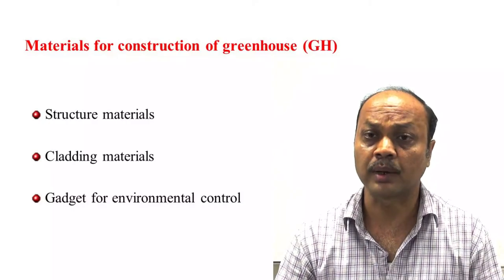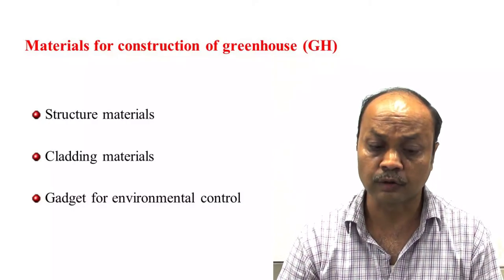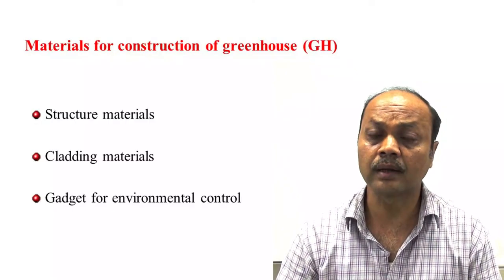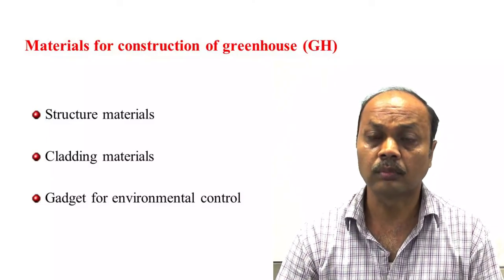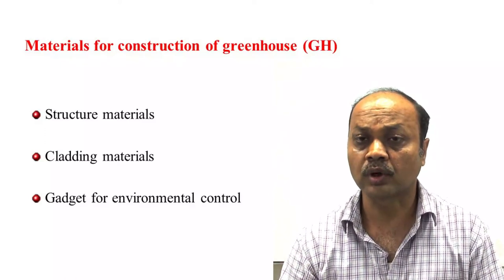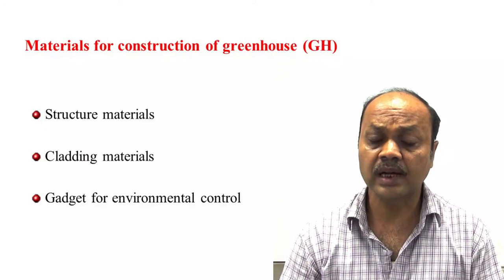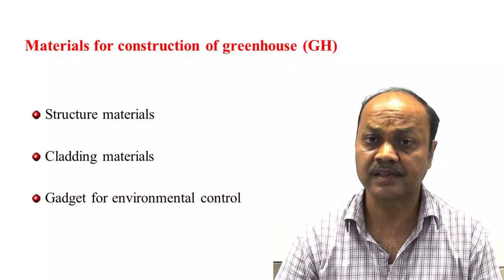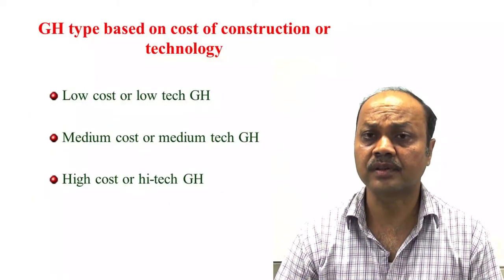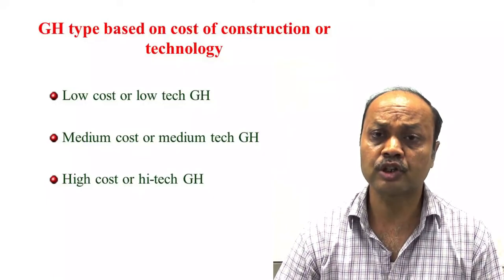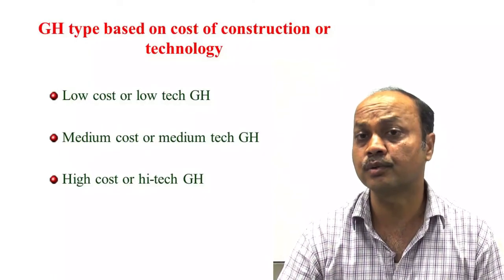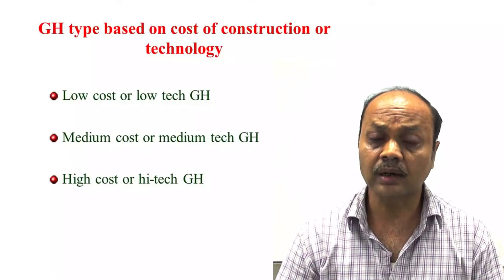The cladding materials we discussed earlier, and then gadgets — various types of gadgets used for heating, cooling, CO2, relative humidity, controlling soil temperature, fertigation — various types of gadgets to automate the greenhouse operation. These were already discussed in the classification of greenhouse based on cost. Today we will discuss about the various types of materials used in the construction of greenhouse.